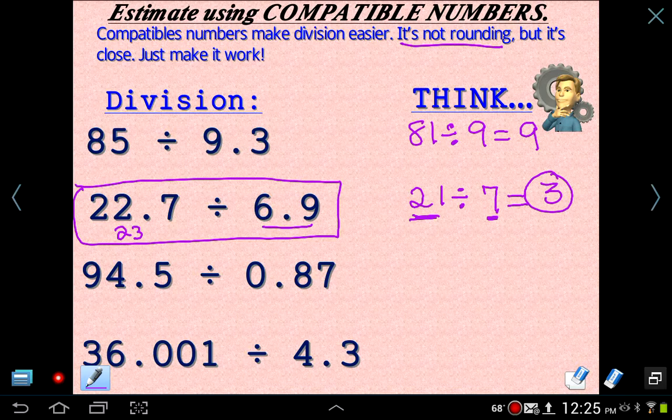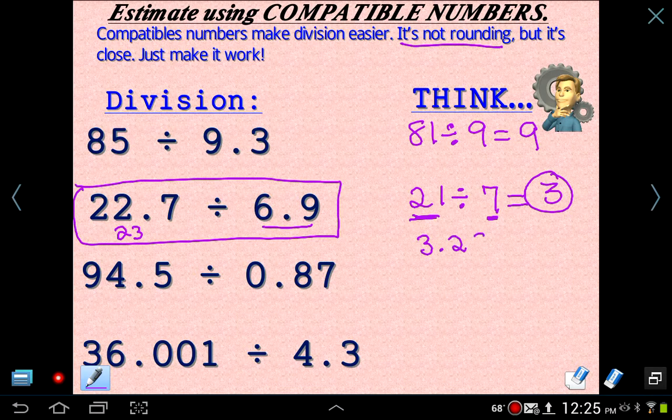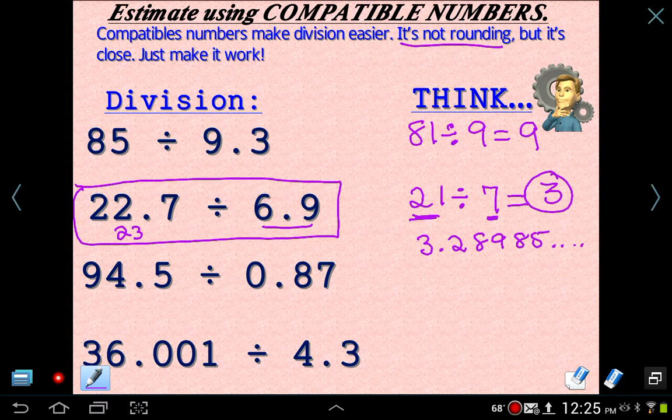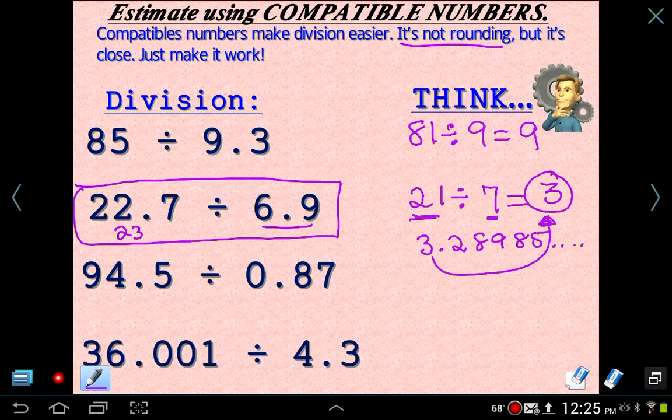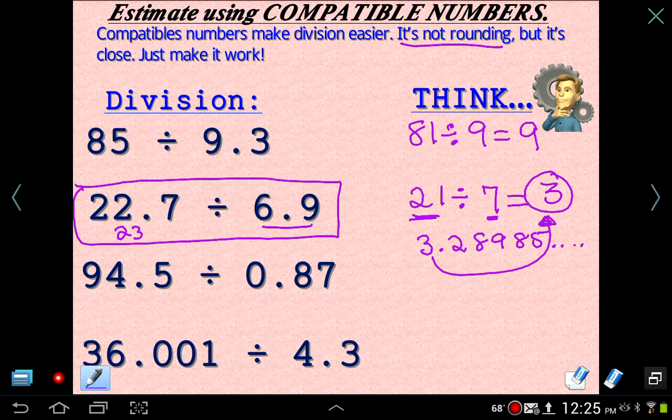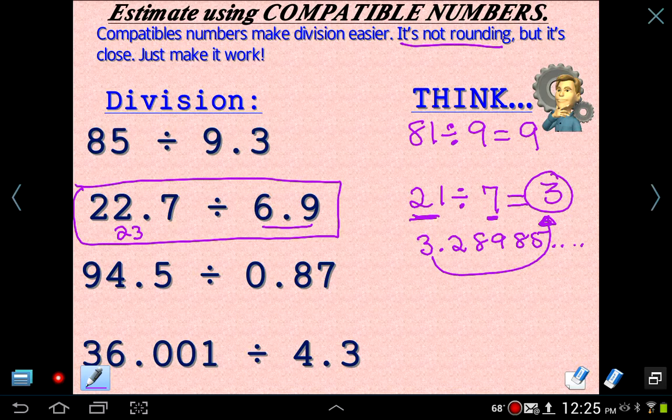Now when I used my trusty calculator, I got 3.28985, on and on and on. So our estimate was pretty close. Now remember, mathematicians, it's important that you estimate so that you know when you actually do the math yourself, and if the answer is not very close, then you know you either didn't move the decimal the right number of places, or perhaps you didn't put the decimal anywhere. Maybe you just kind of left it.